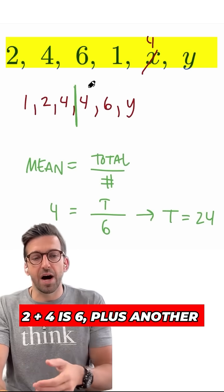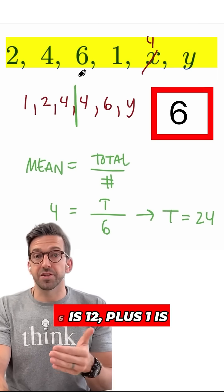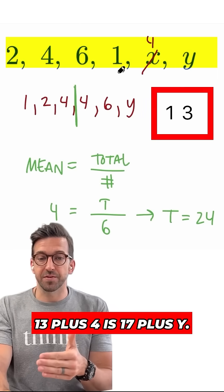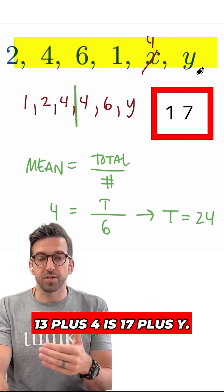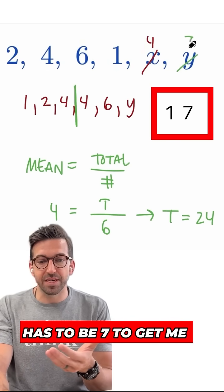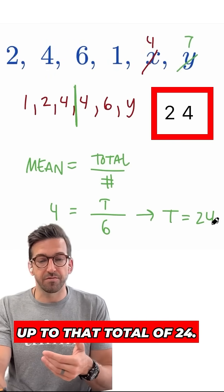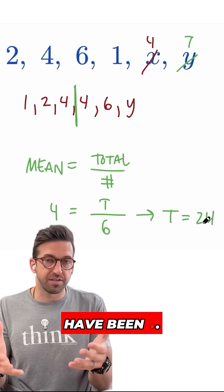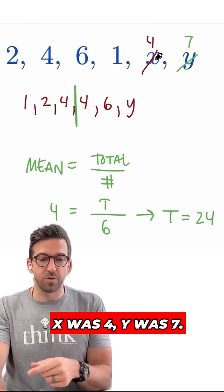What that means is the total of all my numbers here must be 24. Well, that's going to help me find y. Two plus four is six, plus another six is 12, plus one is 13, plus four is 17, plus y. Well, that means y has to be seven to get me up to that total of 24. So now we've discovered the missing number must have been seven.